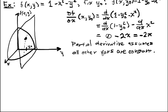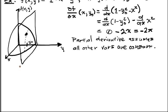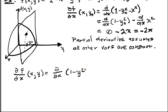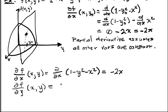That means we can compute all the partial derivatives really simply. For our example, ∂f/∂x of (x, y) — written with a curly d — equals d/dx of (1 - y² - x²). Since 1 is constant and y² is constant with respect to this differentiation, those give 0, and I just have the normal derivative of the x term, which gives me negative 2x. Similarly, ∂f/∂y of (x, y) equals d/dy of (1 - x² - y²). The first two terms are constant, so I just differentiate the y term and get negative 2y.